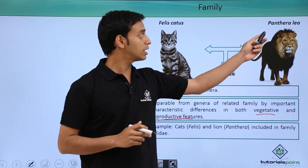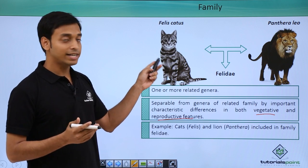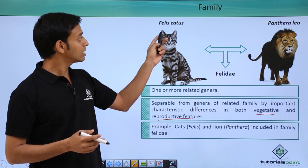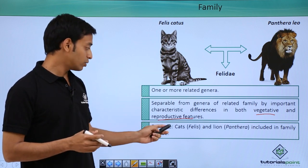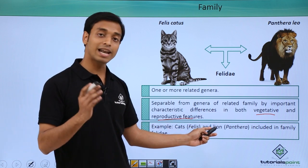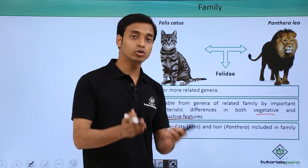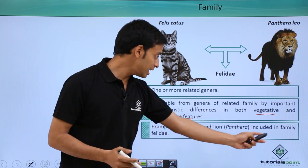Let's take an example. We have talked about the genus Panthera, which includes lion and tiger. Now we can talk about cat. You can see over here it is known as Felis catus. This cat belongs to the genus Felis, whereas lion belongs to the genus Panthera. These two, since they have got related characteristics, are included in the family Felidae.